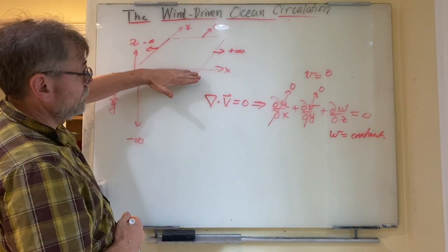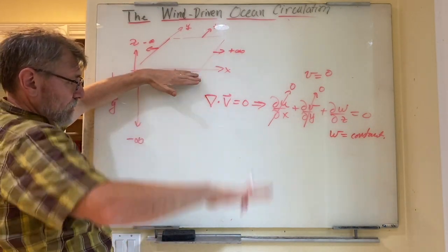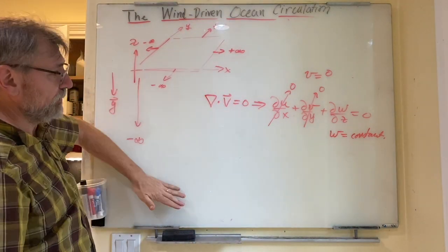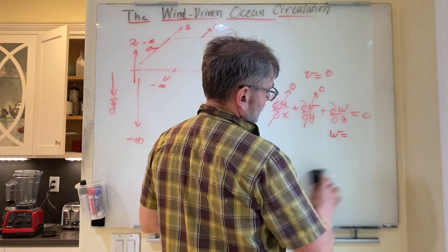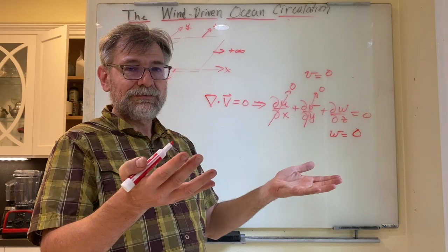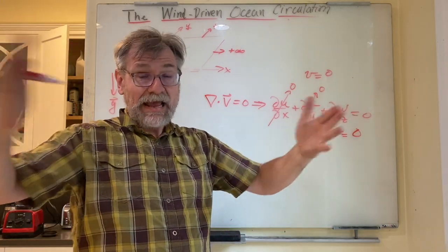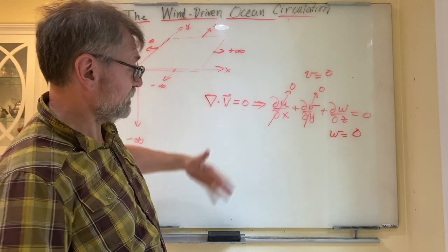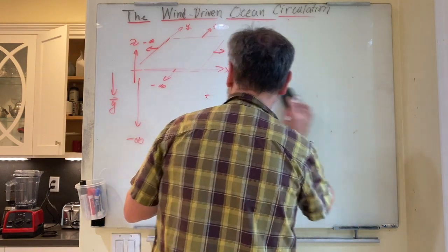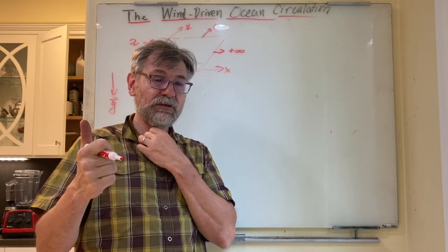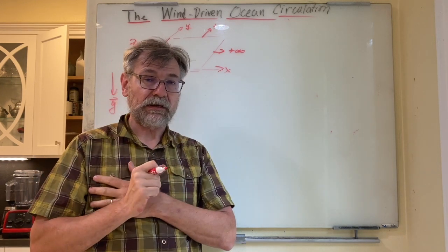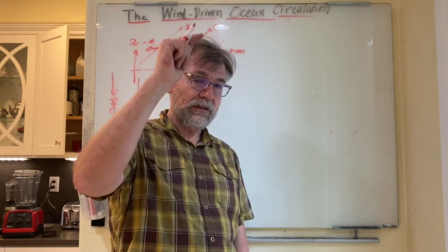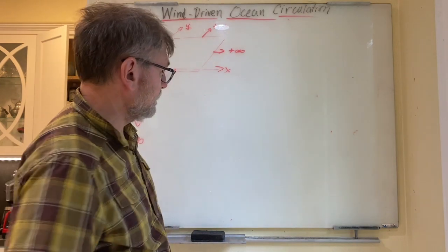Now let's write down the continuity equation. Since the fluid is the same in all directions and we're putting the stress in the x-direction, there will be no velocity in the y-direction — there's no Coriolis force in this problem. So v is assumed zero everywhere. The continuity equation div·v equals zero becomes du/dx plus dv/dy plus dw/dz equals zero. Since v is zero and everything is independent of x, we get dw/dz equals zero, so w is a constant.